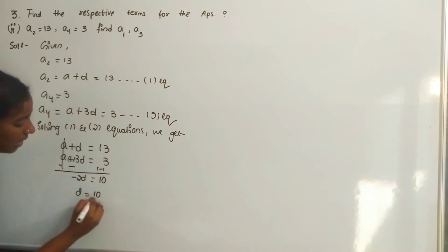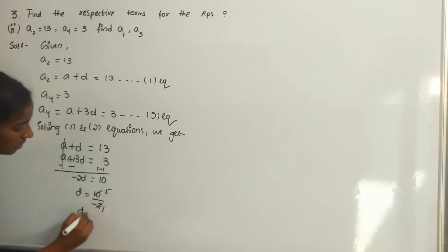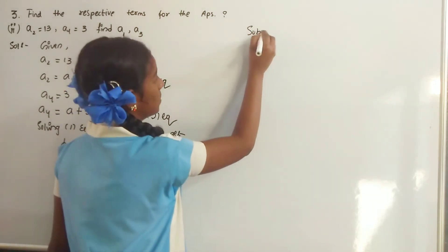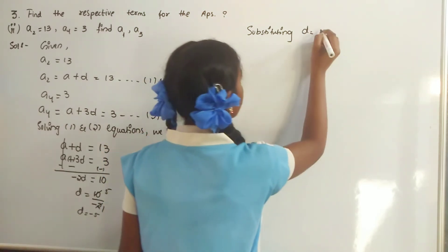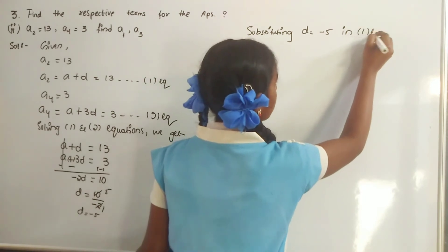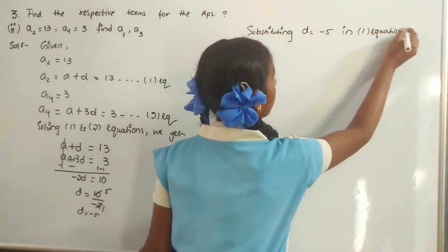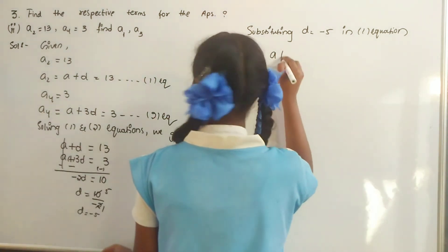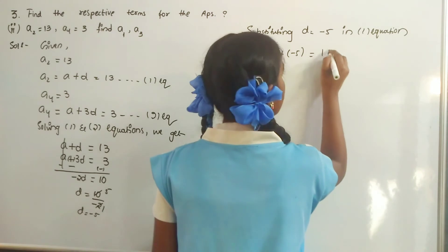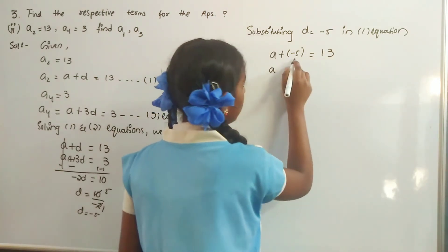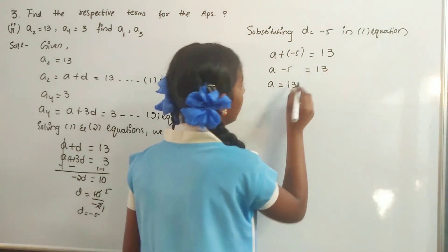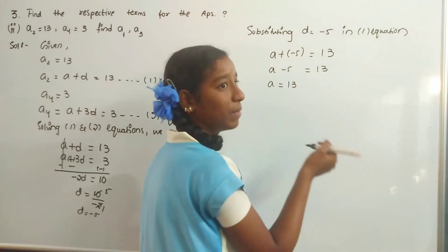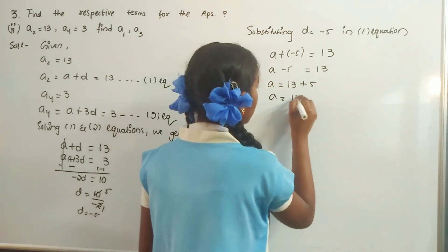D is equal to 10 by minus 2, so D is equal to minus 5. Substituting D is equal to minus 5 in the first equation: A plus minus 5 is equal to 13. Minus 5 transfers to the other side and becomes plus 5. So A is equal to 13 plus 5, which is 18.